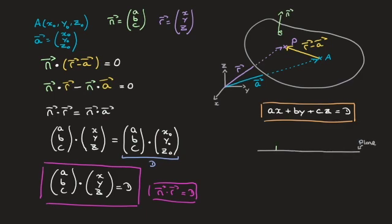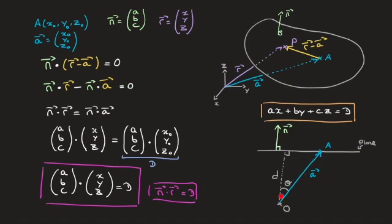The normal vector n is perpendicular to the plane. We have the position vector of point A from the origin O. The dotted line shows the perpendicular projection of the origin onto the plane, and the distance from the plane to the origin is the length of that dotted line. If the angle between that dotted line and vector a is theta, then using right-angle trigonometry, the distance d equals the magnitude of a times cosine of theta.